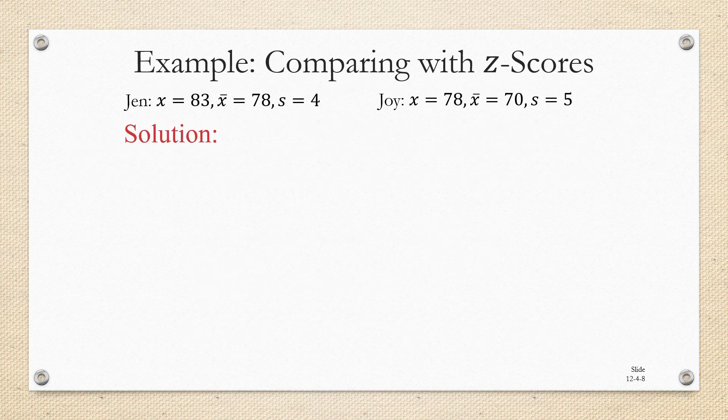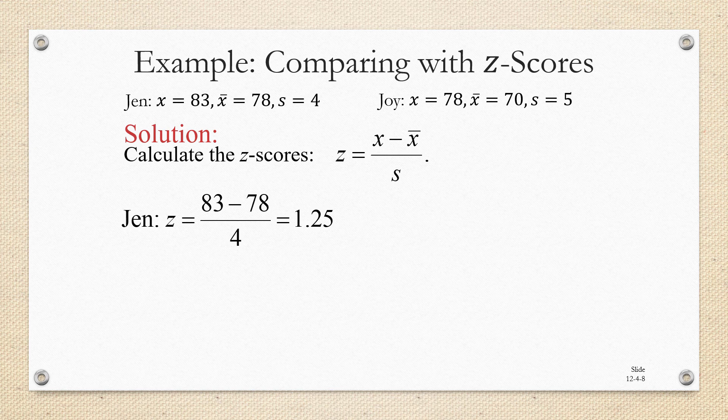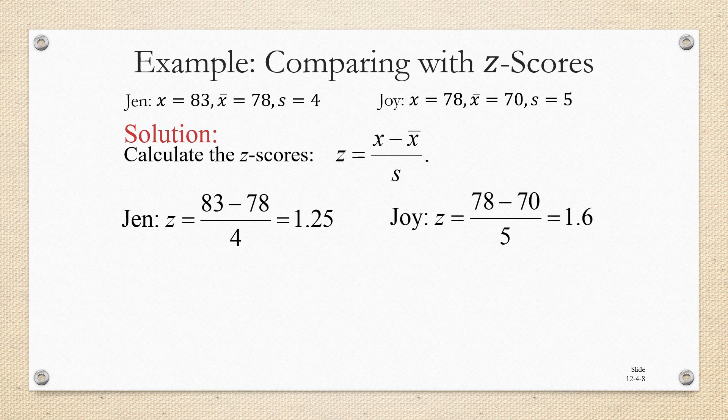And now we're going to calculate their Z scores. So the Z score formula is X minus X bar over S. So we're going to find Jen's Z score by taking 83 minus 78 and dividing by 4, which gives us 1.25. Similarly, we'll find Joy's Z score. 78 minus 70 over 5 equals 1.6.